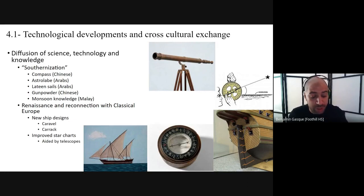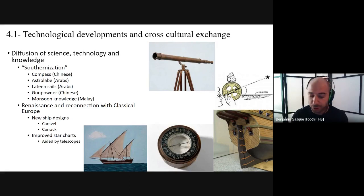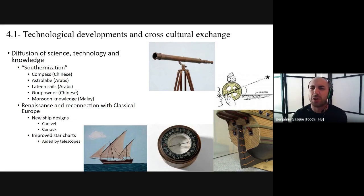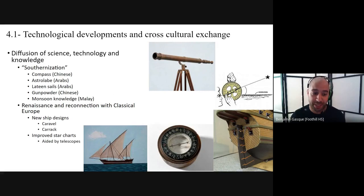The fluyt was designed by the Dutch and was a little bit smaller than the carrack, about 80 feet long, with several masts using square and triangular sails and a stern post rudder. Those three ship designs — the caravel, the carrack, and the fluyt — are things you definitely need to know and have in your notes.